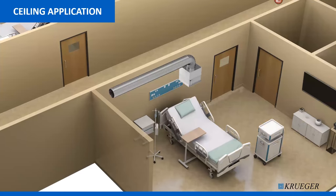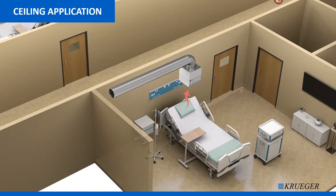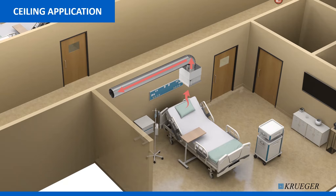Let's discuss the specific application of these units, starting with the ceiling mounted unit. A rendered image shows a patient isolation room where the 2x2 unit is placed in the ceiling, specifically near the head area to capture any aerosolized particles coming off the patient. Red arrows indicate the discharge from the patient being sucked up into the unit and then passed out through the exhaust. We'll discuss options for handling that exhaust later in the presentation.